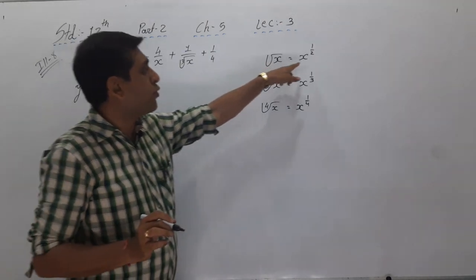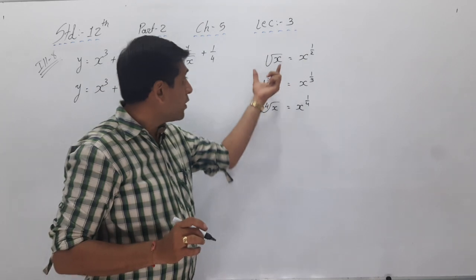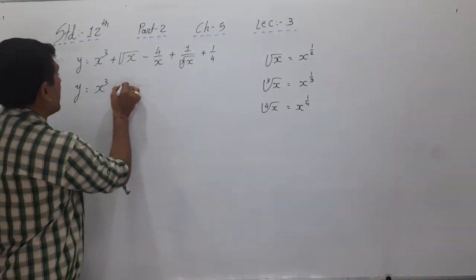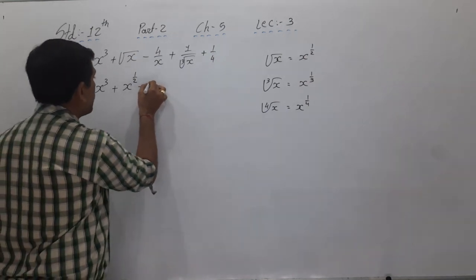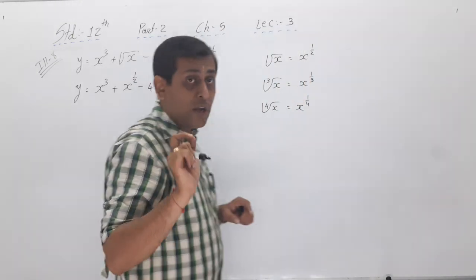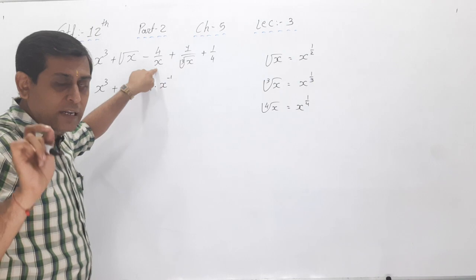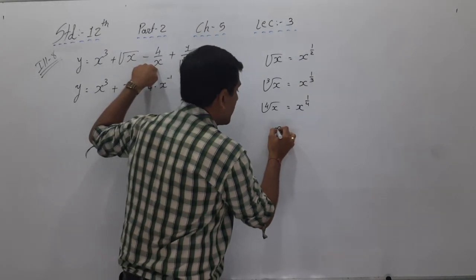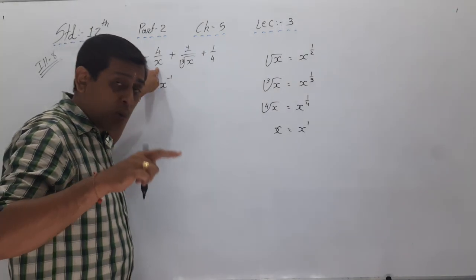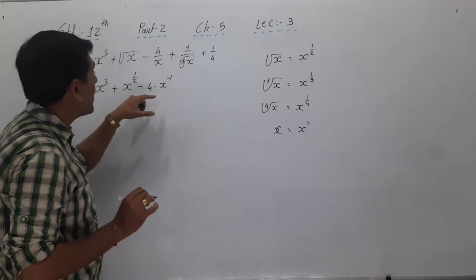So the final answer for illustration 8 is: dy/dx = 3x² + 1/(2√x) + 4/x² - 1/(3·∛(x⁴)). Illustration number 8 is complete.